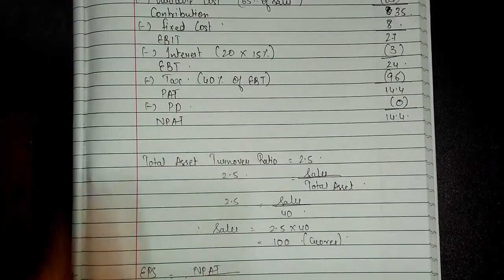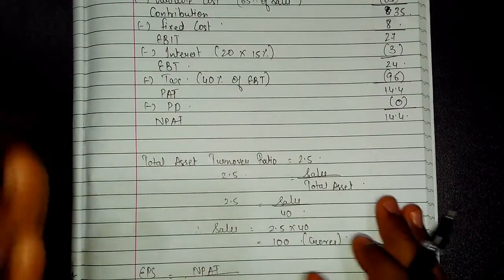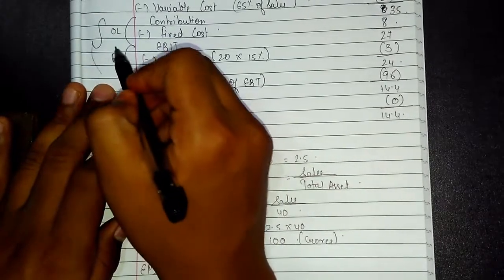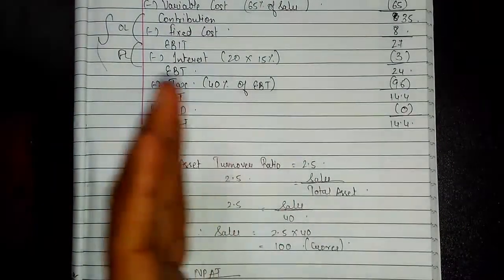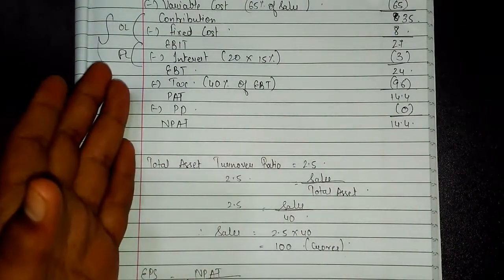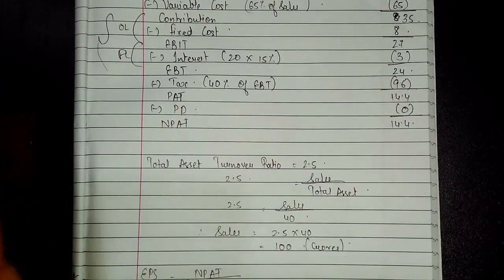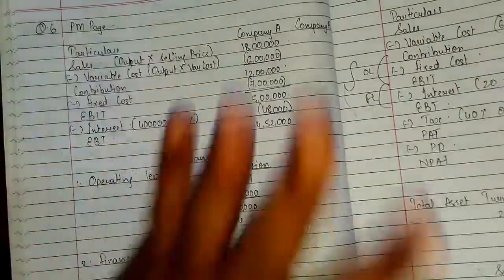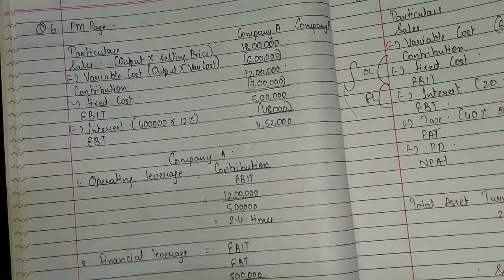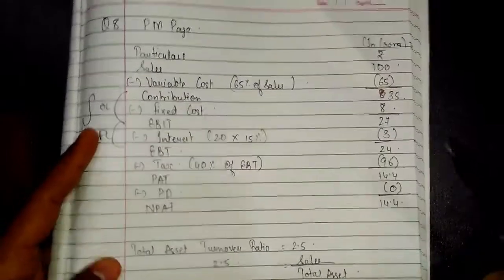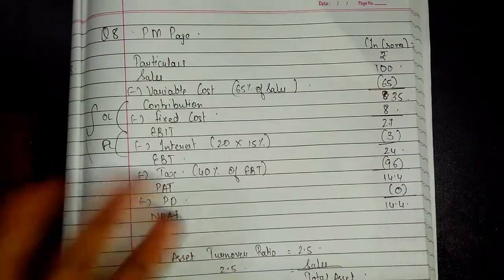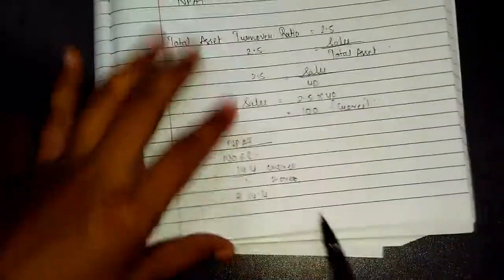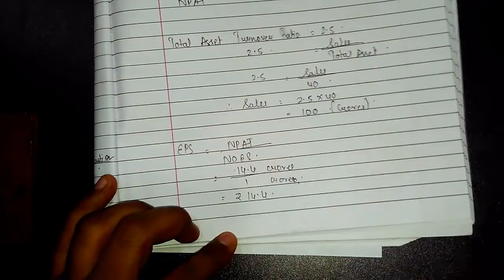For operating leverage, financial leverage, and combined leverage: the operating leverage formula uses Contribution, the financial leverage formula uses EBIT and EBT, and combined leverage equals operating leverage multiplied by financial leverage. Please go back and revise the interpretation I gave earlier and write it on your own. Be careful not to make silly mistakes with units — note ₹14.4 and crores are both important to state correctly in your answer.